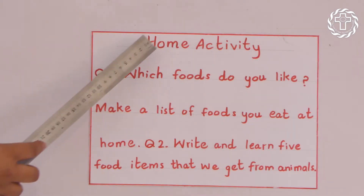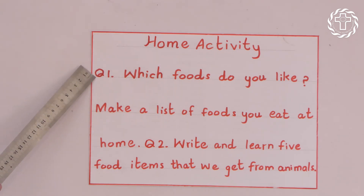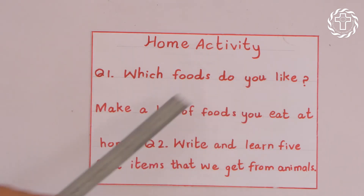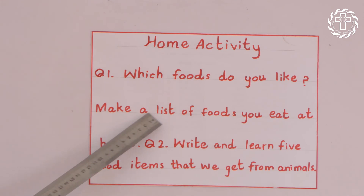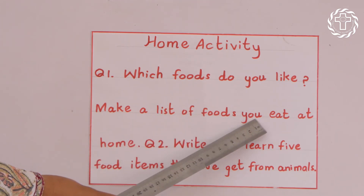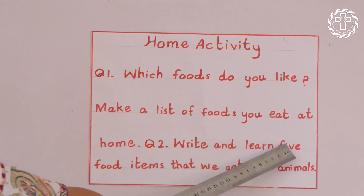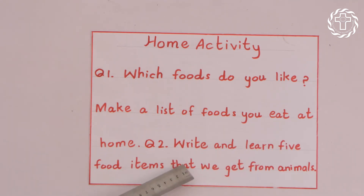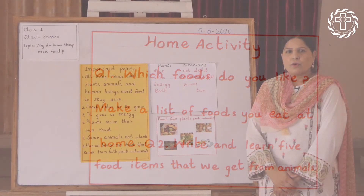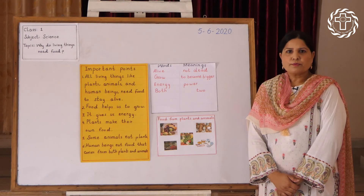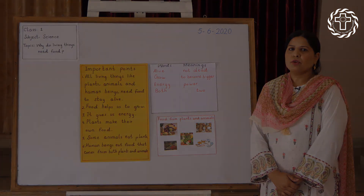This is your home activity. Question one: which foods do you like? Make a list of foods you eat at home. Question two: write and learn five food items that we get from animals. Okay students, stay home, stay safe, God bless you all.